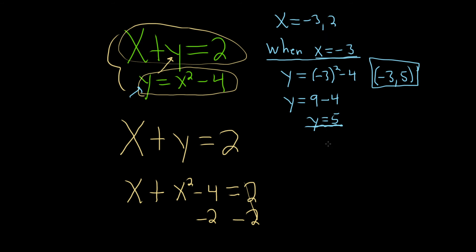Now we do it again for the other one. So when x equals 2, we get y equals, plugging it into the same place, x squared minus 4. So 2 squared minus 4. So y equals 4 minus 4. So y equals 0.